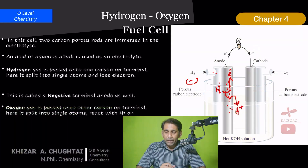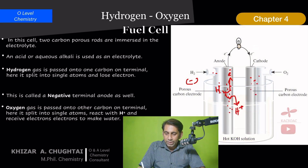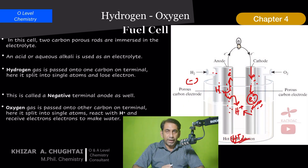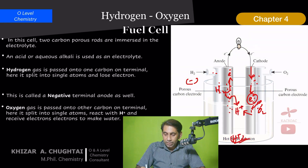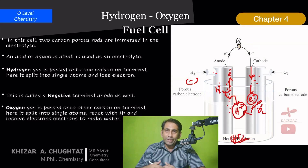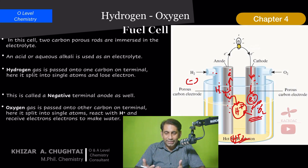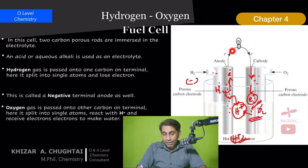Oxygen is passed through the other terminal, passing through the carbon rod. It captures the electrons coming from the wire and also combines with H⁺ ions from the acidic electrolyte. Oxygen is reduced at this terminal, which is called the cathode. So hydrogen is oxidized and oxygen is reduced, generating a successful flow of electrons.